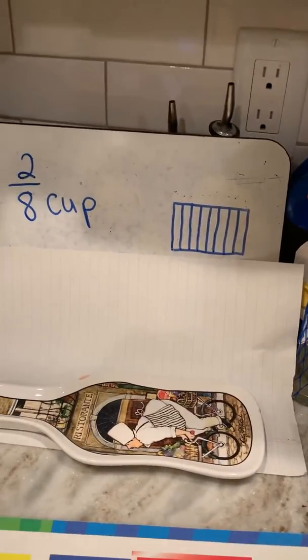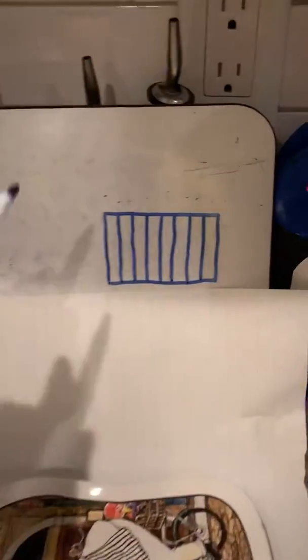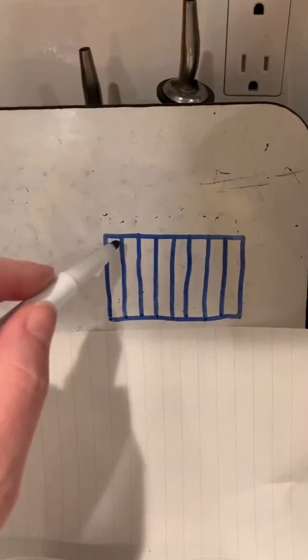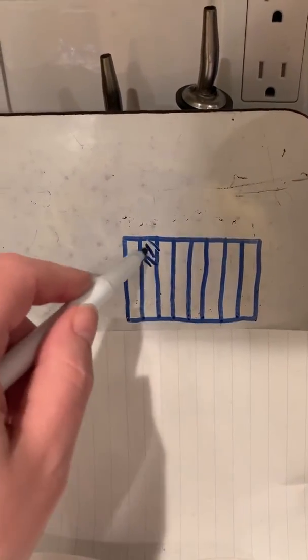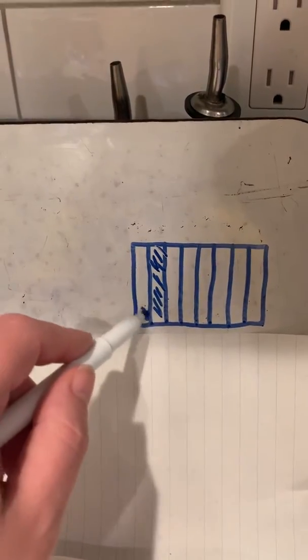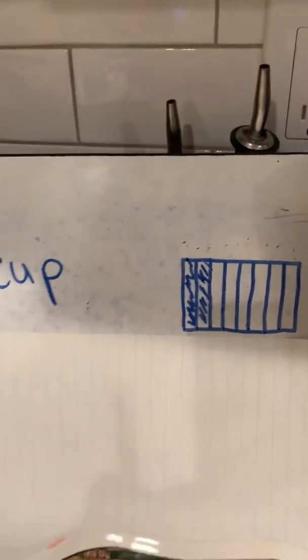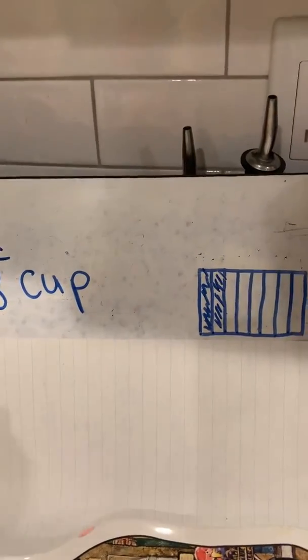So here I drew out a model and I divided it into eighths. Now I am going to shade two of those eighths. One, two. Now I need to think, how can I simplify two eighths?